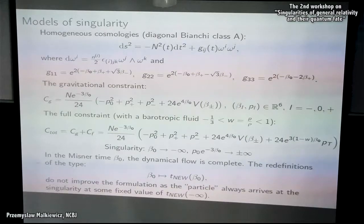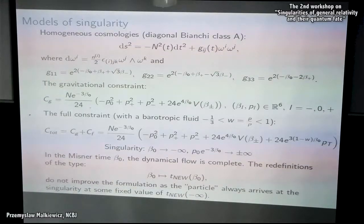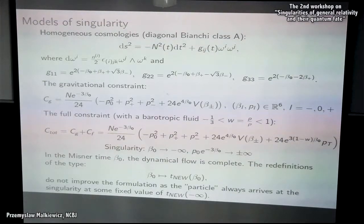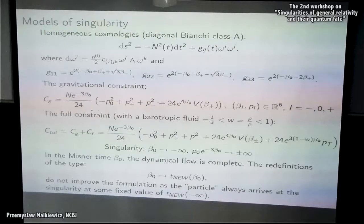I will assume that this is a diagonal model, and the metric components will be parameterized by Misner variables. Beta-0 is a logarithmic variable — e to the three times beta-0 is the volume — so beta-0 is an isotropic variable, and beta-plus and beta-minus describe the anisotropic deformations of the spatial leaf.